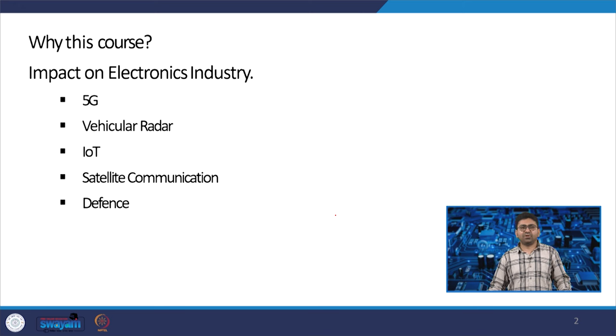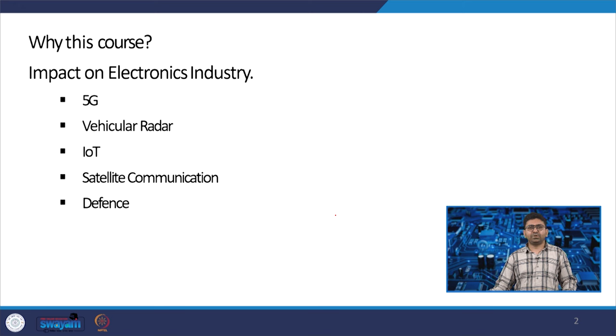The third area is IoT — Internet of Things. Right now we have many things around us and we are trying to connect them to the Internet. The moment we try to connect things with the Internet, there is a lot of demand for wireless communication and RF transceiver design. IoT is also playing a significant role in the future direction of the electronics industry.